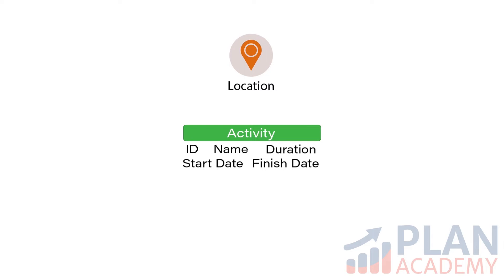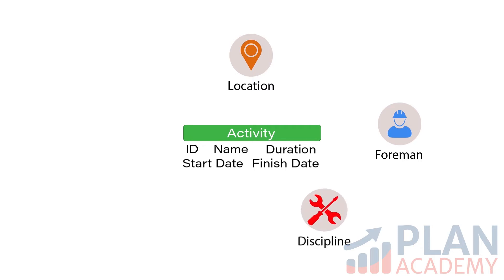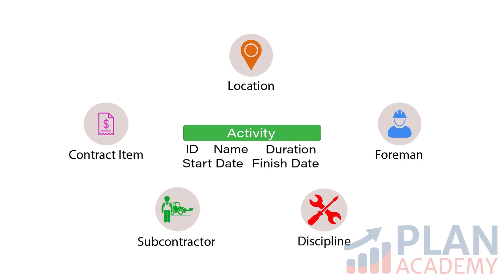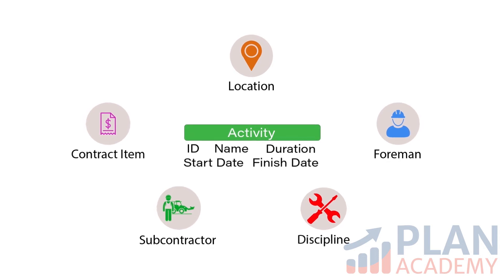What if you really wanted to track which activities are assigned to your three foremen? Just add your three foremen to an activity code and then tag your activities appropriately with each foreman. What about identifying which trade owns the activity, or maybe which subcontractor? What about linking project activities to contract items from the bid? These are only a few examples of additional information you can add to your schedule using P6's Activity Codes.